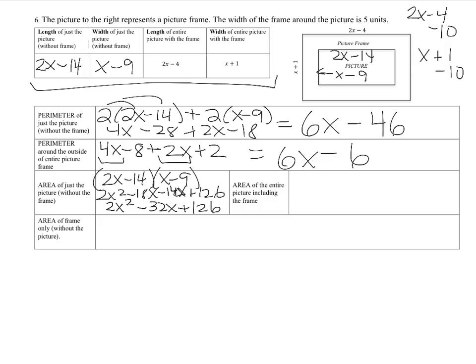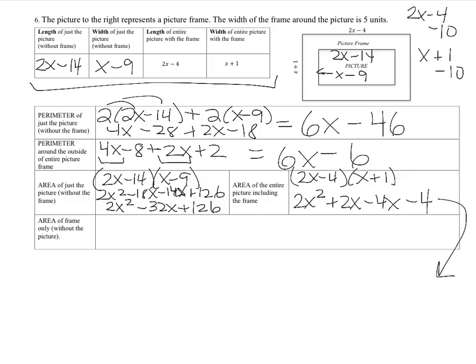For the area of the entire picture including the frame, multiply (2x minus 4)(x plus 1) using FOIL: 2x times x is 2x squared; 2x times 1 is 2x; negative 4 times x is negative 4x; negative 4 times 1 is negative 4. Combining like terms: 2x squared minus 2x minus 4.